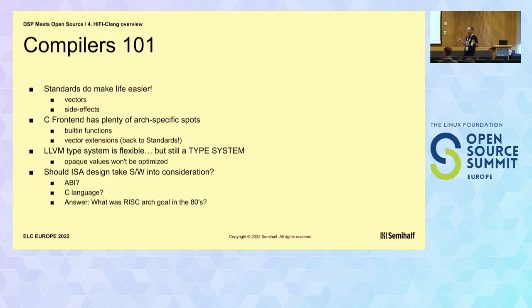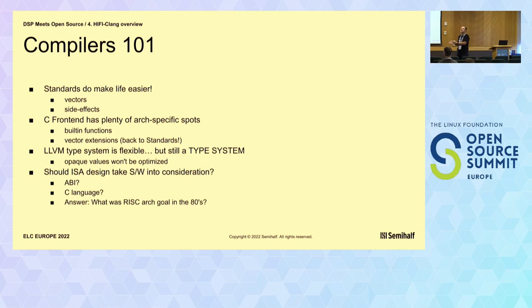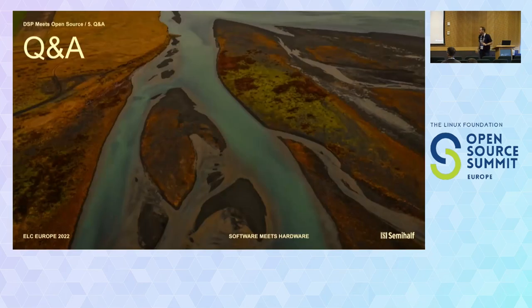The LLVM type system is flexible but not flexible enough for Xtensa — I'm not proposing to extend it for a singular architecture, just noting it's tied to the C type system and doesn't fit unusual types like fractional numbers. Opaque values that can't be reasoned about inside the compiler can't be optimized. The last takeaway: ISA design should take the target language into consideration — think about RISC in the 1980s, where a key design goal was making it easy for C compilers to generate code. If you design your own ISA, think about C-friendliness, including things like zero-extension, for which Xtensa has no single instruction despite being an obvious need for any C compiler implementer.